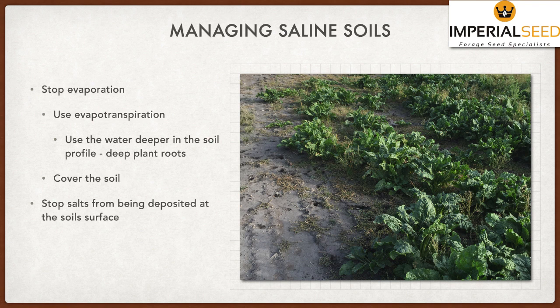We want to reduce evaporation and cover the soil, ideally with plants. If it is so saline that nothing will grow, we want to create a cover for that soil — take some straw bales, something with a wide carbon-to-nitrogen ratio, which will rot slowly. Something with a tight carbon-to-nitrogen ratio, like alfalfa bales or something green and young, will rot down very quickly. We want to create a blanket over that soil so water doesn't have a chance to evaporate, then get more seeds established to get something growing. We need to stop salts being deposited at the soil surface and push them down through infiltration.